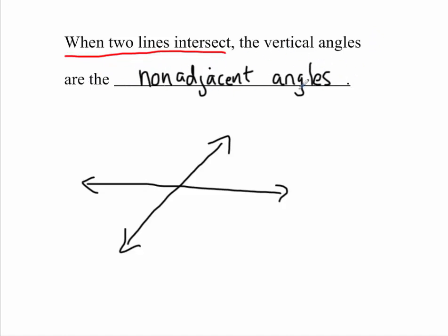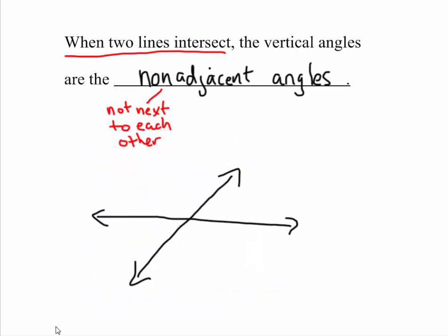So what do we mean by non-adjacent angles? Non-adjacent means they're not next to each other. So that's what we're going to look at now. When two lines intersect, the vertical angles will be the angles that are not next to each other, and we just call that non-adjacent.